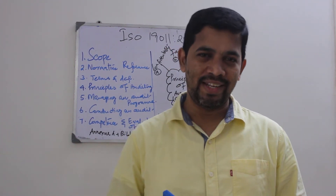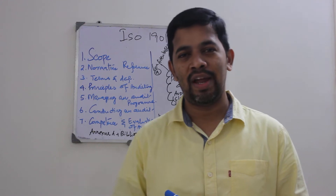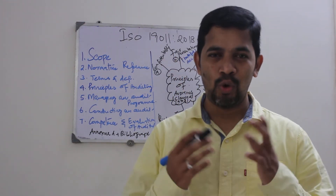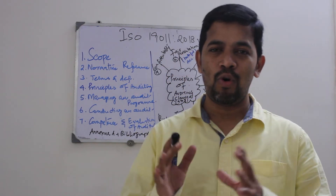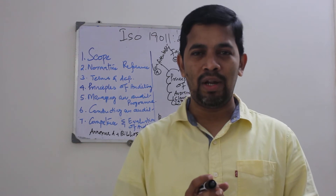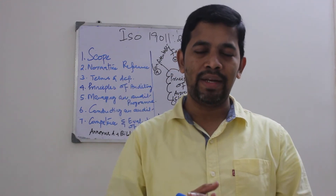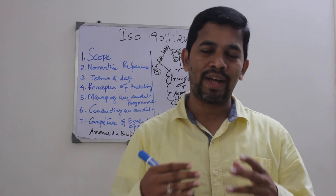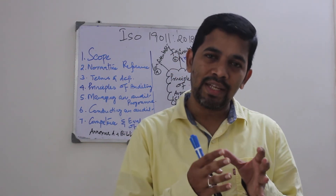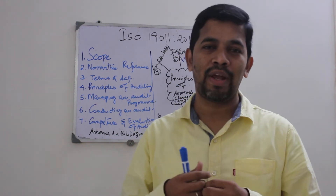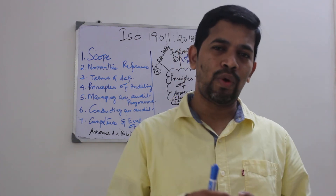Hi everyone, welcome back to Abdurah Nale's channel. Today we are going to see part 4 of ISO 19011, 2018 version. As you all know, ISO 19011 is the guideline for auditing management systems. This is the fourth video — the first three videos covered a basic overview of ISO 19011, the seven clauses broadly explained, the types and categories of audit, and the FAQs addressing common misconceptions about ISO 19011.